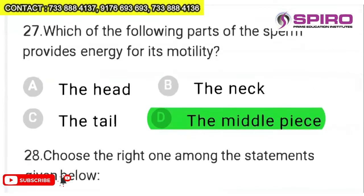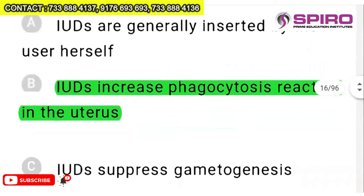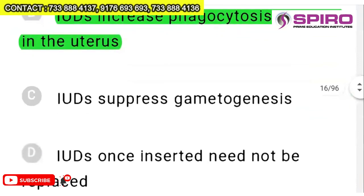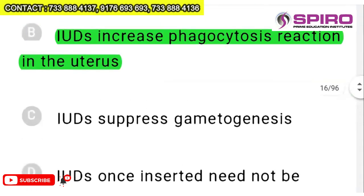Question 27: which part of the sperm provides energy for its motility? The middle piece — you know very well that mitochondria is present there. Straight answer. Question 28: choose the right statement about IUDs. Generally inserted by the user itself is incorrect. IUDs increase phagocytosis reaction in the uterus — yes. IUDs do not suppress gametogenesis — correct, it is independent. IUDs once inserted need not be replaced is false — they must be replaced. So option B is right.